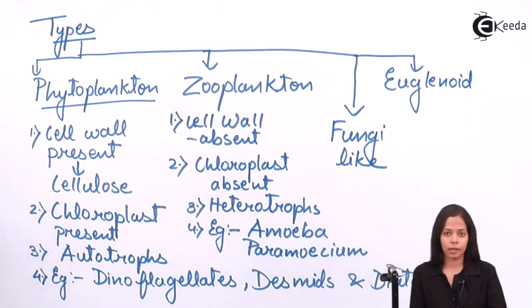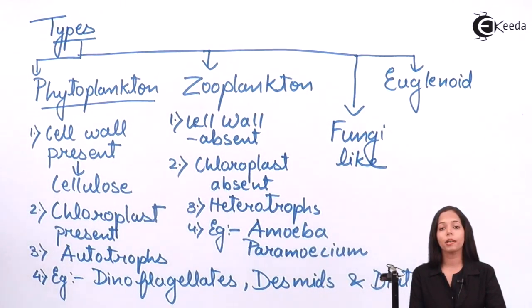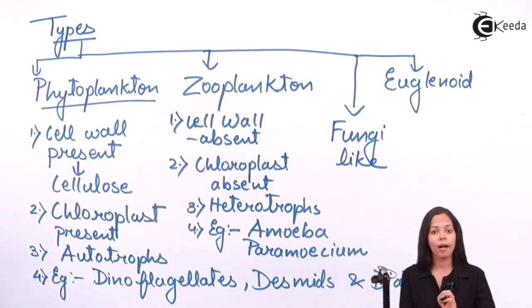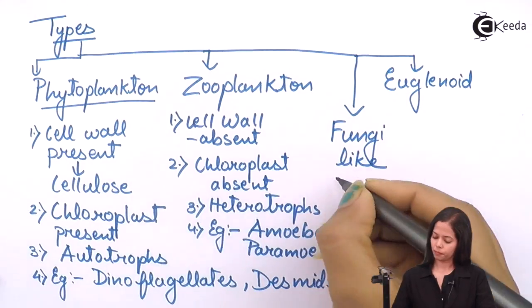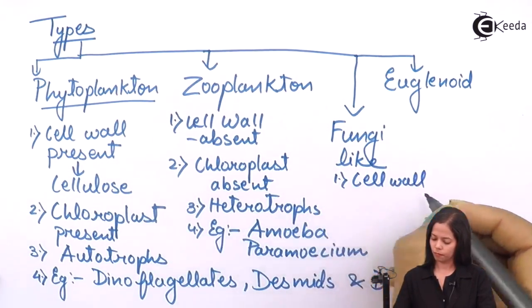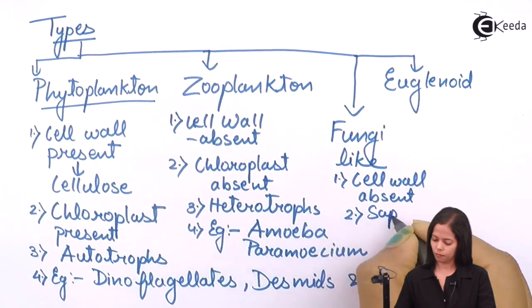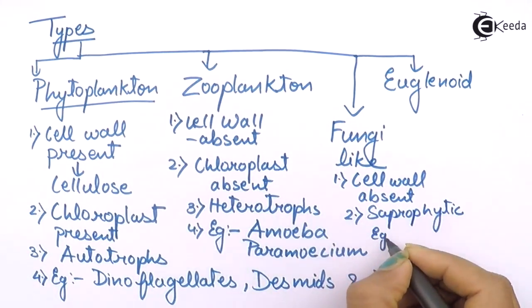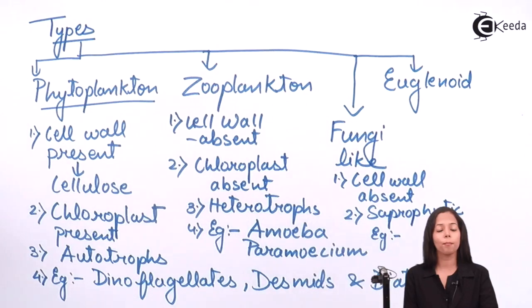Now fungi-like protists. Fungi-like protists have two features: one, cell wall is absent; and second, they are saprophytic. Because fungi are saprophytic, we call these protists fungi-like protists. The only example of fungi-like protists is slime mould.